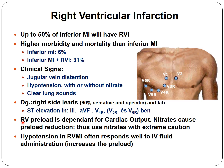Right ventricular preload is dependent on cardiac output. Nitrates cause preload reduction, so use nitrates with extreme caution or avoid them entirely. Hypotension in right ventricular myocardial infarction often responds very well to IV fluid administration because it increases preload.